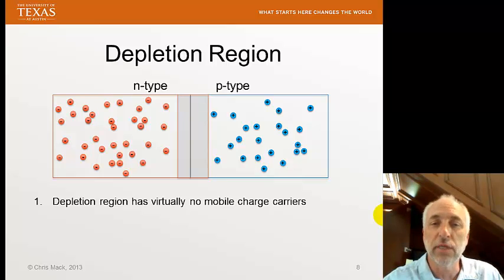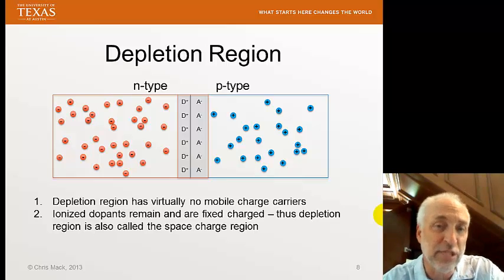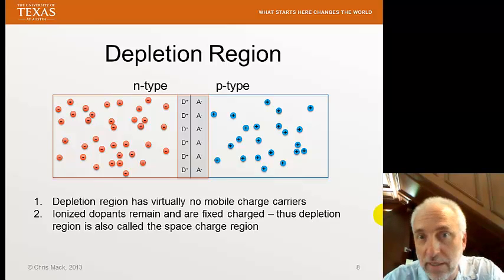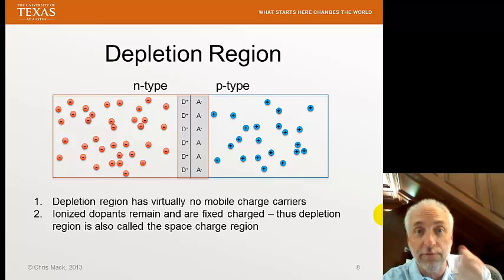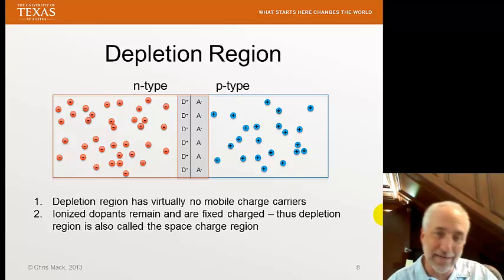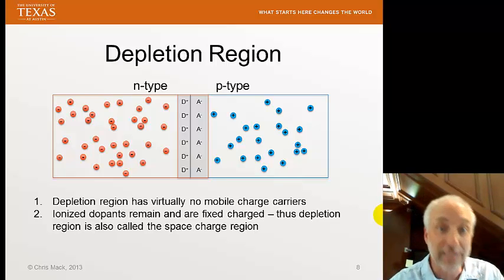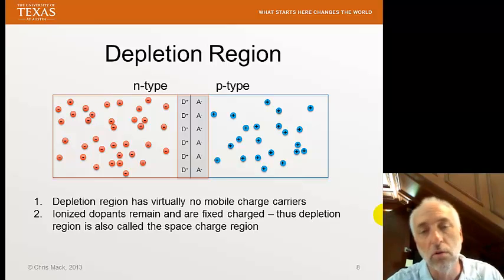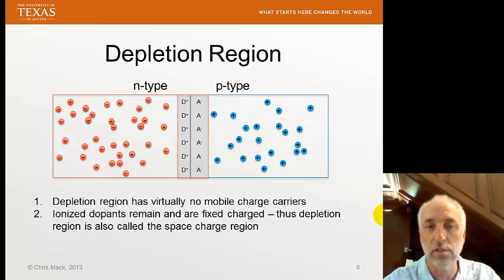We should look more carefully at what's in that depletion region. The mobile charge carriers have disappeared, but the dopants are still there — and they're ionized. In the N-type region, the donors incorporated into the crystal gave up their electrons and are now positively charged ionized donors, fixed in place. In the P-type region, ionized acceptors that accepted an electron are negatively charged. In the bulk material outside the depletion region, these fixed charges are electrically compensated by mobile carriers, so the material is neutral.